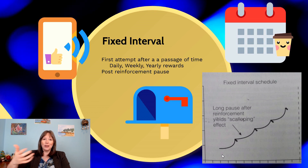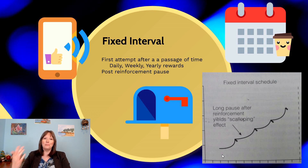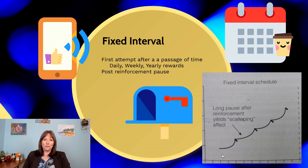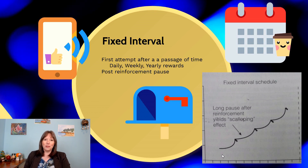With a fixed interval app, you don't have to unlock the feature right at 9 a.m. — you could go in at 5 p.m. — but you can only unlock it once a day and it resets at 9 a.m. You learn to check at a certain time before the limit expires. With coffee, this could be a coffee club giving one free coffee per week or month. Canada Post delivering mail once a day is another example — once it's arrived for the day, you won't get mail again until the next day.